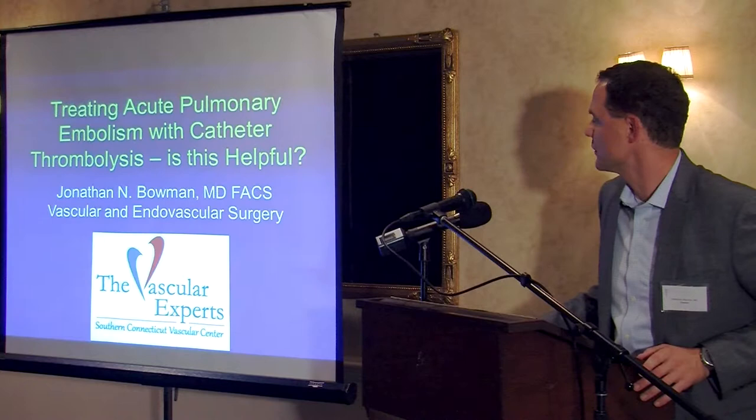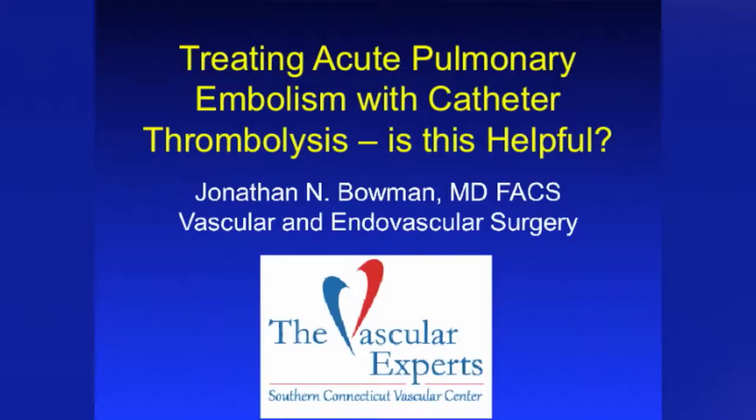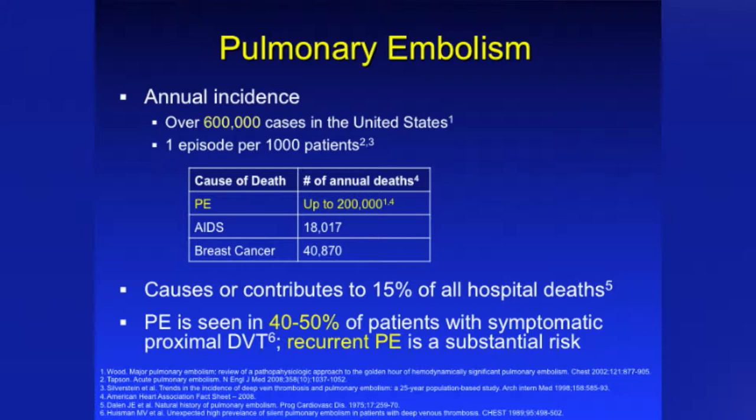Thank you very much for having me. As the title says, we're going to talk about treating acute pulmonary embolism with catheter thrombolysis. Pulmonary embolism is relatively common in the United States, with over 600,000 cases per year — about one episode per 1,000 patients. The annual cause of death by PE is much greater than other more publicized diseases. It causes or contributes to over 15 percent of hospital deaths.